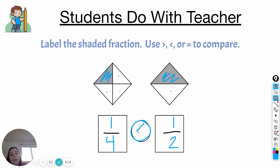You should have written the less than symbol. So one fourth is less than one half, because we can see that one half takes up more space than one fourth, and that's because our denominator is smaller. Because it's smaller, that makes our pieces bigger. So each piece takes up more space.